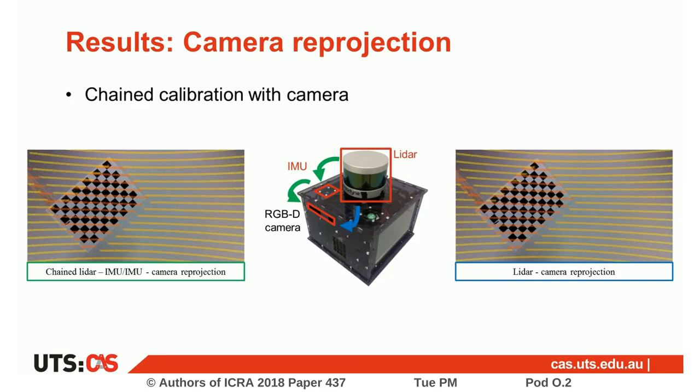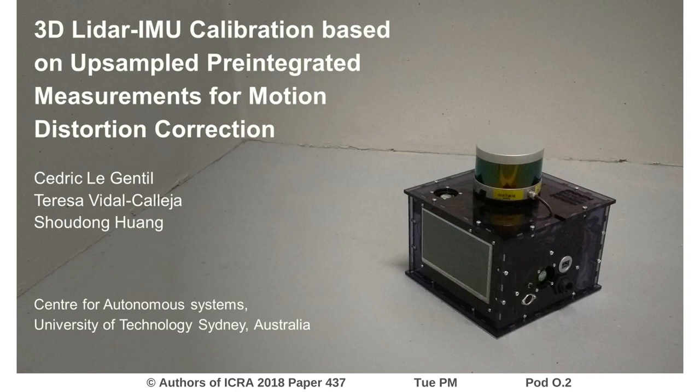We also show the performance of our method by comparing the reprojection of LiDAR points in the camera frame of our sensor suite. One calibration on the left chains our IMU-LiDAR method with an IMU-camera calibration. The second on the right is a direct calibration between the LiDAR and the camera. We can visually see that both paths give relatively similar results. Thank you.